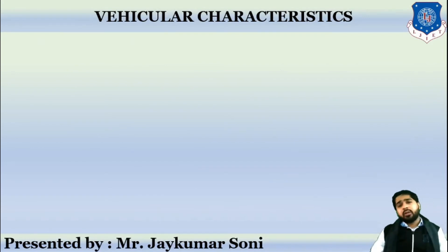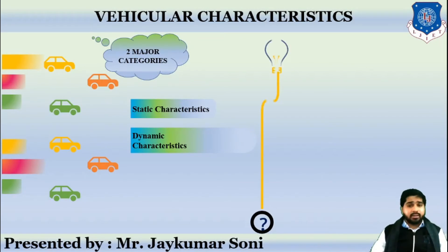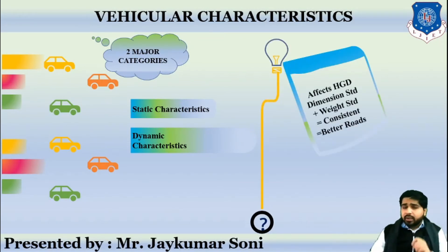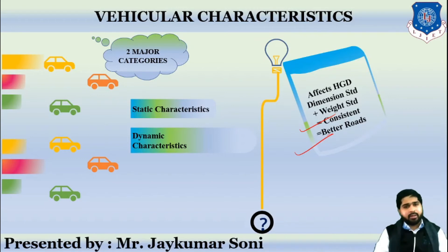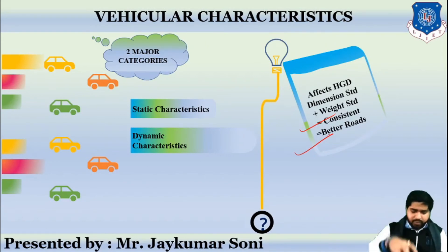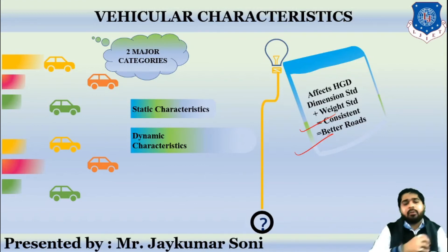Now let us discuss vehicular characteristics. Vehicular characteristics can be divided into two major categories: static characteristics and dynamic characteristics. They play an important role because they can affect highway geometry, dimensions, standards, and load standards. If the vehicular characteristics are consistent and norms are fixed — for example, a vehicle of this category should not exceed a certain amount of load or weight — then there will be consistency in standards that helps engineers construct better quality roads.